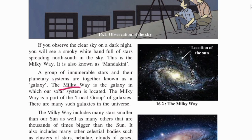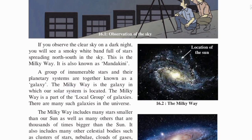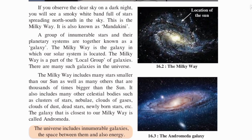The Milky Way is the galaxy in which our solar system is located. So our solar system is in the Milky Way galaxy. The Milky Way is part of the local group of galaxies. There are many such galaxies in the universe — not just one galaxy, but many galaxies — and all these galaxies together make up our universe.